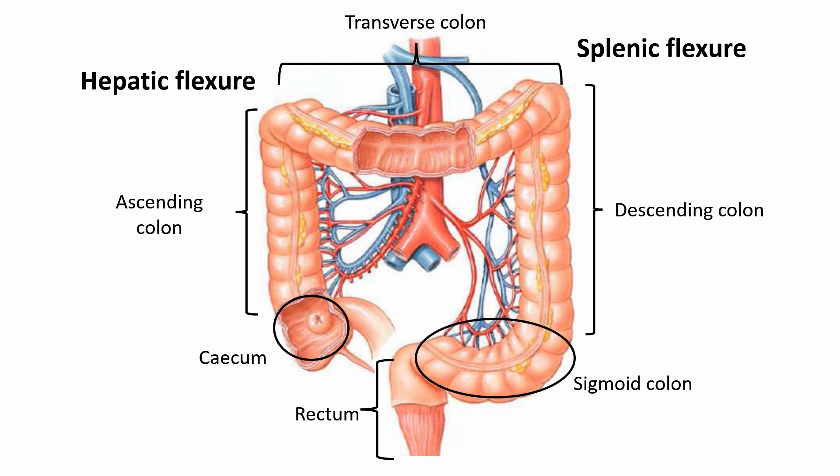The transverse colon is continuous with two posterior layers of the greater omentum and is the largest section of the large intestine. It ends at the splenic flexure, which is generally higher than the hepatic flexure. The descending colon is retroperitoneal and goes from the splenic flexure to the sigmoid colon. The sigmoid colon is intraperitoneal and is suspended via the sigmoid mesocolon, which contains lymphatics, colic vessels, autonomic nerve fibers, and extraperitoneal fatty tissue. Its function is to link the descending colon with the rectum, and it is also the site of diverticuli.